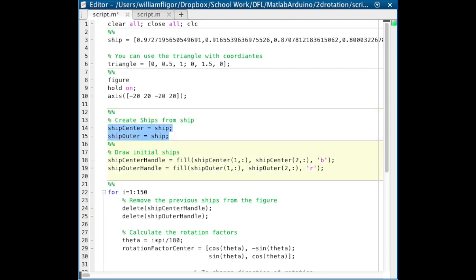Next, create two ships from the ship. Draw the initial ships. We set the output of the fill command, which are handles, to ship center handle and ship outer handle for use later.